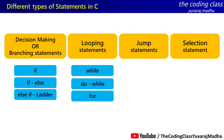Next, there are jump statements. In a jump statement, instead of running the program line by line in the normal conventional way, we pass control between different lines. For example, from line number 3 we can jump to line number 10, then run line number 4 — skipping the sequential flow.